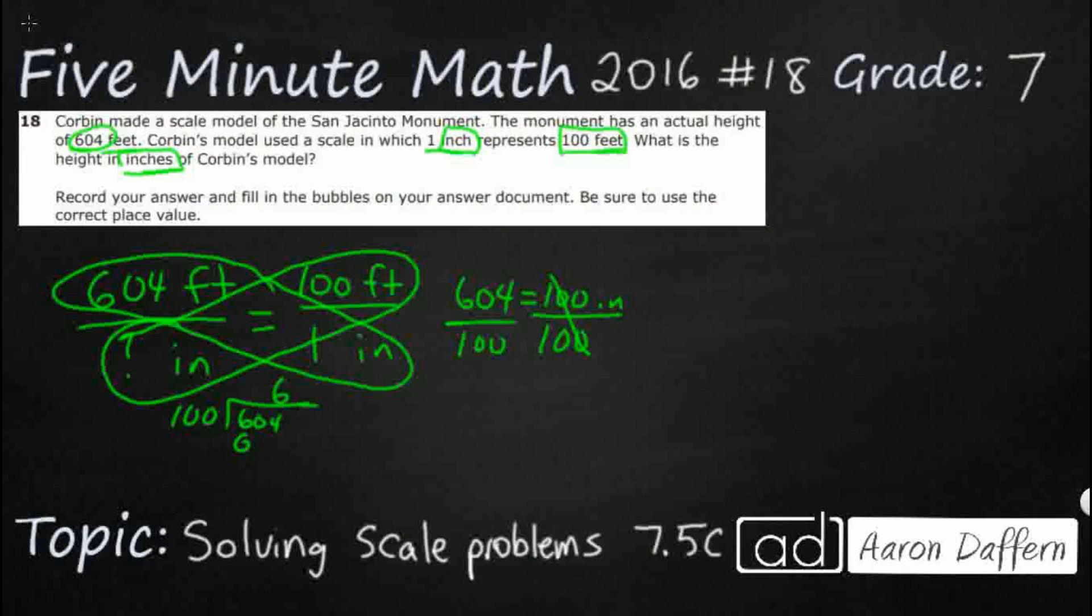So that's going to be 600. That's only going to give me 4, so I need a decimal. 100 is not going into 40, but I can bring down another 0. It goes into 400 four times. So 6.04 or 6 and 4 hundredths.